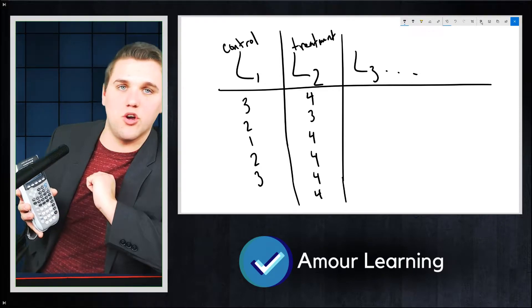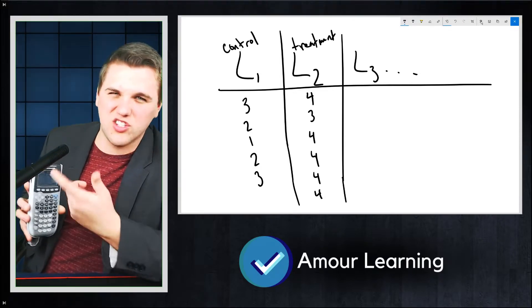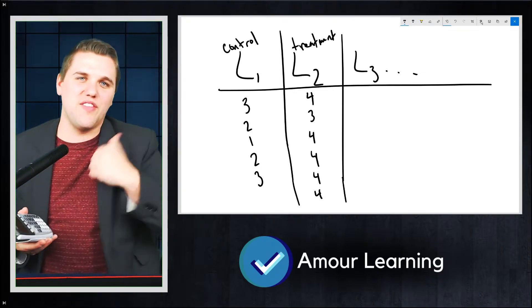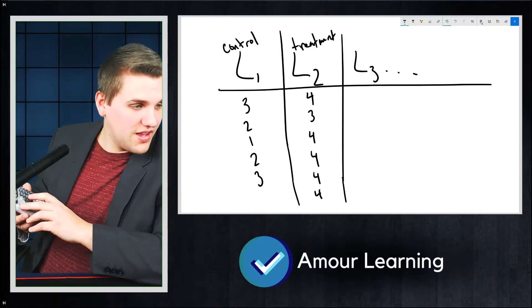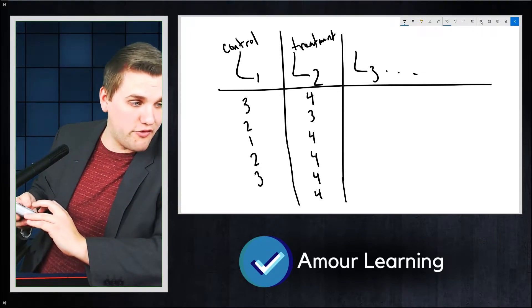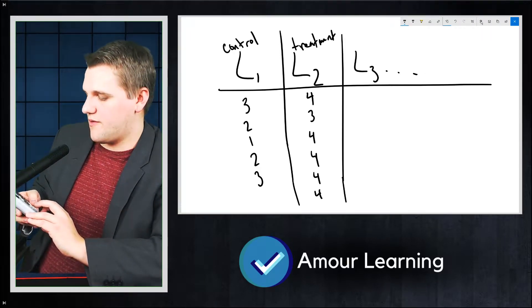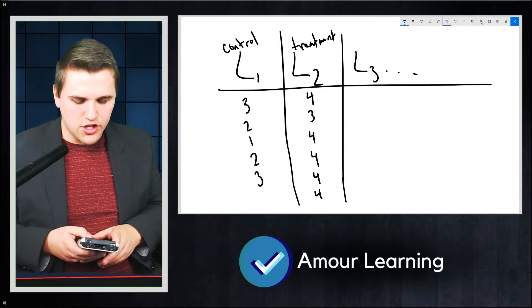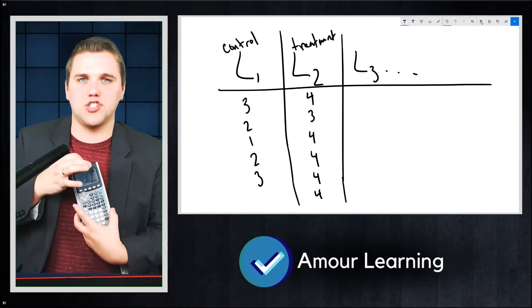And then you move to the right to go to your second sample. And then, I know it's hard to see because you should be relying on this guy over here. And then L2 is 4, 3, 4, 4, 4, 4. There we go. So you should have a list 1 with numbers and list 2 with numbers.